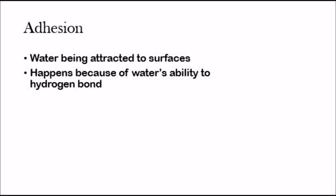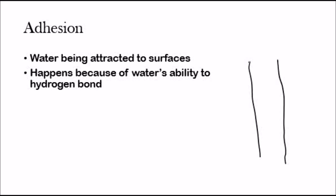Now, adhesion is when water is attracted to surfaces. And again, this happens because of water's ability to hydrogen bond. Adhesion is very apparent in test tubes — maybe in chemistry you've seen this. In a test tube, water will not be flat. The water within a test tube will typically have somewhat of a curve like this. And that's because of adhesion — the water molecules are sticking to the side of the container.